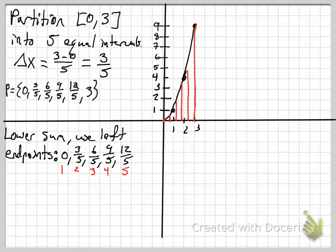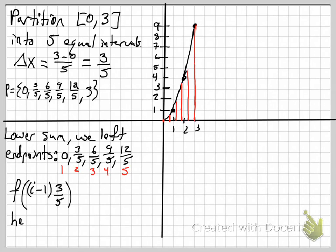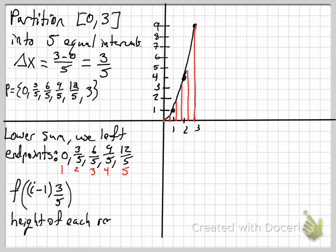Our index runs from i equals 1 all the way to 5. For the left endpoints, we use i minus 1 times the width of a rectangle to determine the left endpoint. So if i equals 1, we get 0; i equals 2, we get 2 minus 1 times 3/5, which gives 3/5. So f of (i−1)·(3/5) is the height of each rectangle for our lower sums.